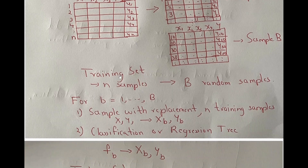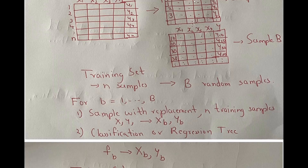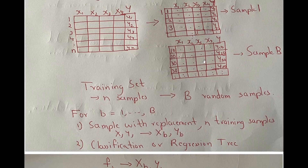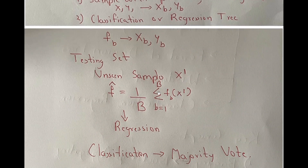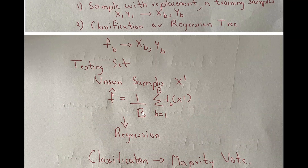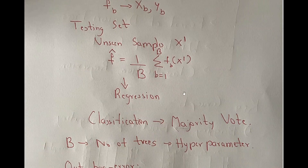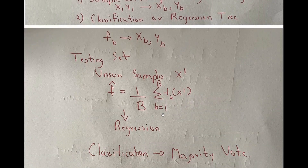So your training set has N samples and you have now created B random bagged datasets. For each of these B bagged datasets, you will create a classification or a regression tree — you will have B classification or regression trees. For inference, when you get an unseen sample: if it is regression, you give the unseen sample as input to each of the B trees and average the output. If it is classification, you do a majority vote on the output of each of the B trees. This is the concept of bagging with decision trees.